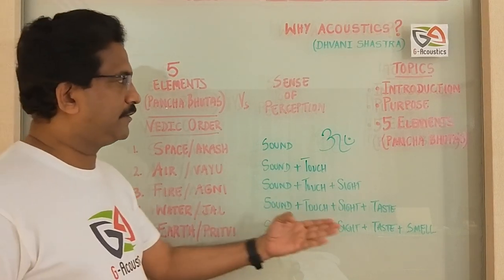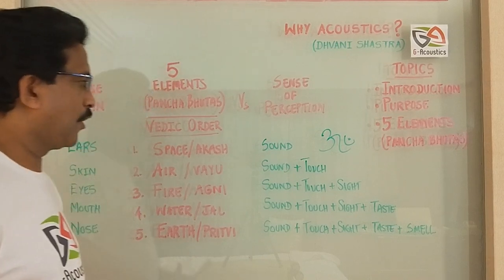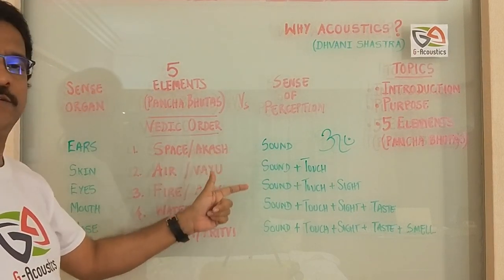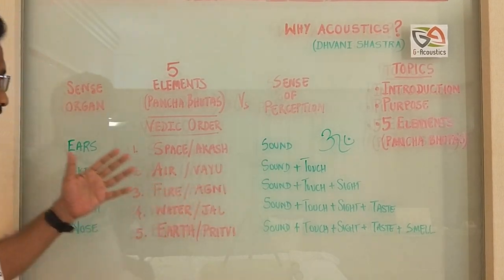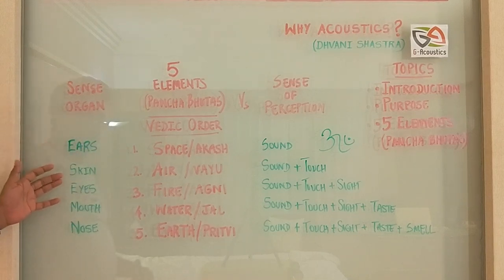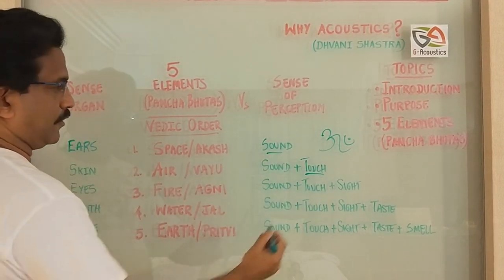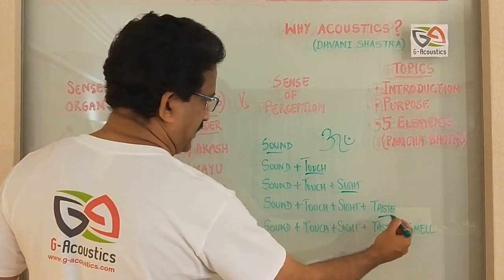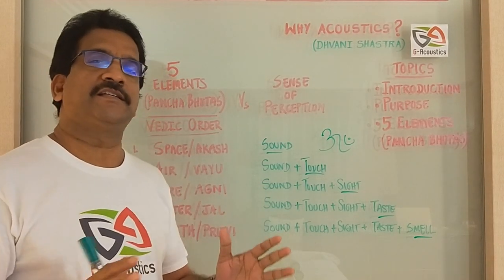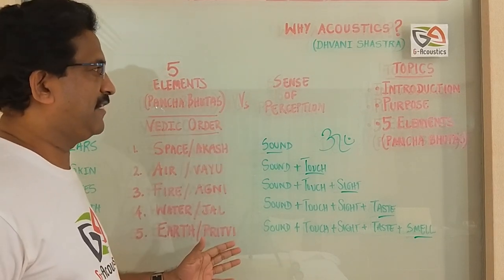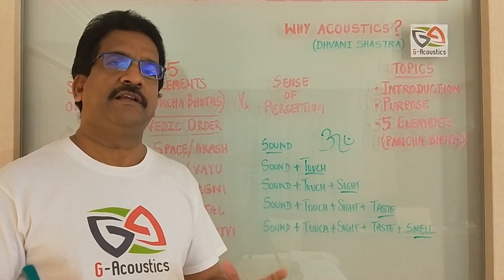For earth, all five senses of perception are present: sound, touch, sight, taste, and smell. Now if you observe, sound is present in all five elements. To perceive all these senses we need sense organs — ears, skin, eyes, mouth, and nose. Ears for hearing, skin for touch, eyes for sight, mouth for taste, and nose for smell. That is the beauty of the significance of Panchabhutas in acoustics — sound is present in all five elements, which makes acoustics a truly interesting subject.